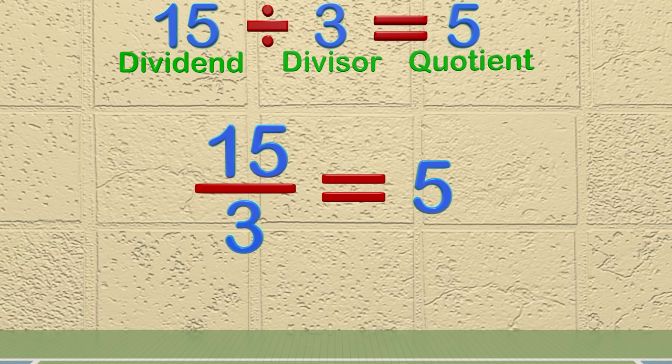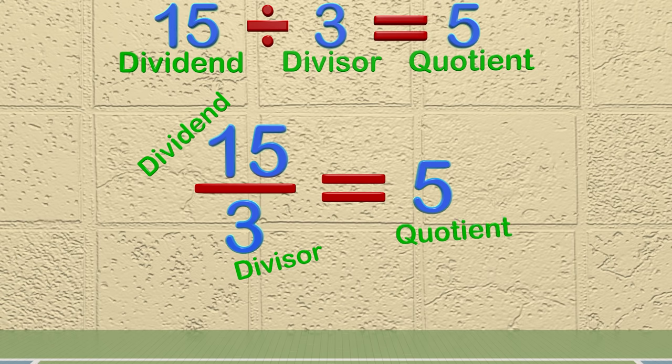Again, this problem is the same as the one above. The 15 is the dividend and is on top of a division bar. The 3 is the divisor in the problem and the number 5 is the quotient.